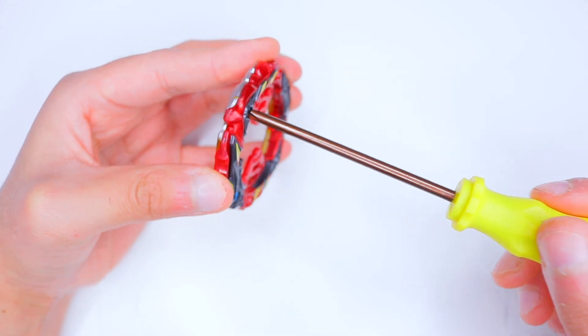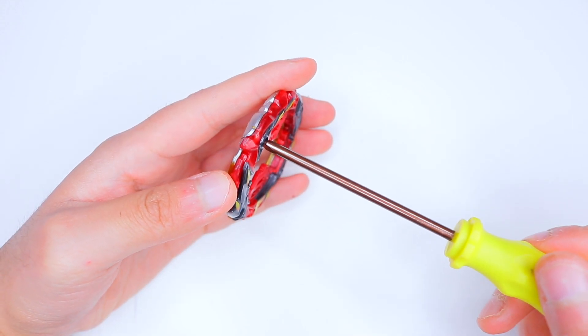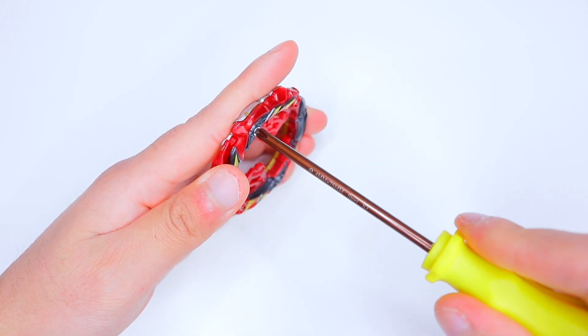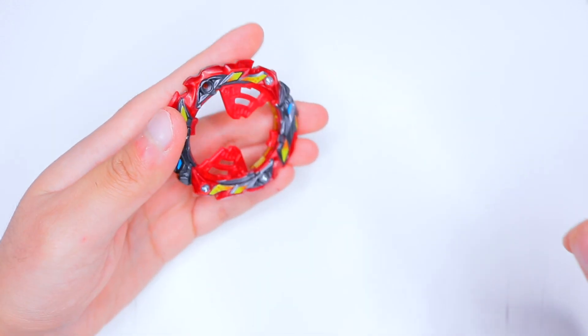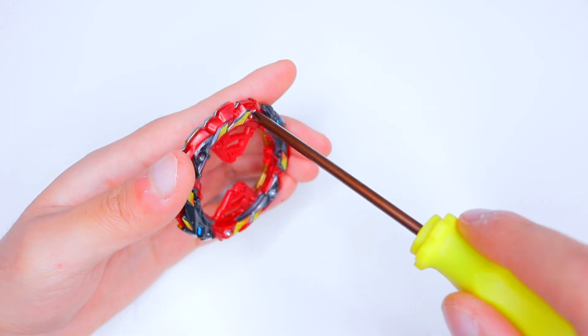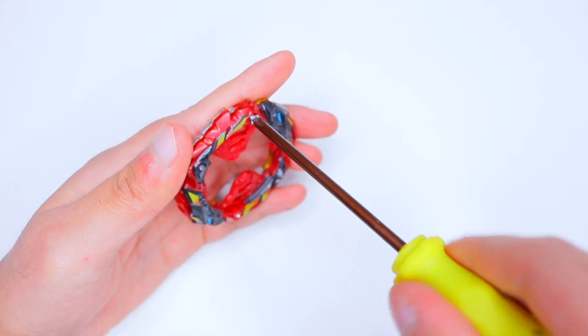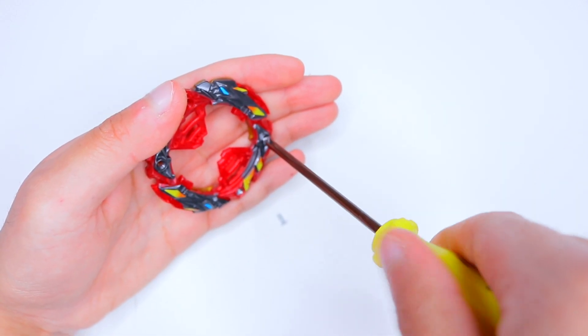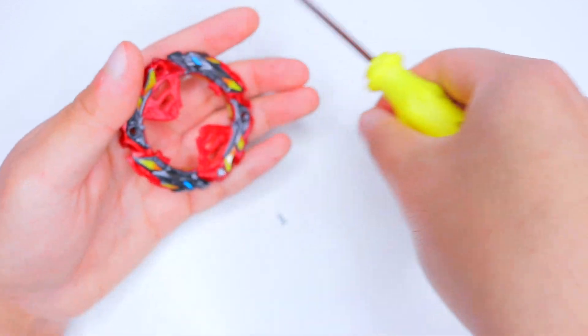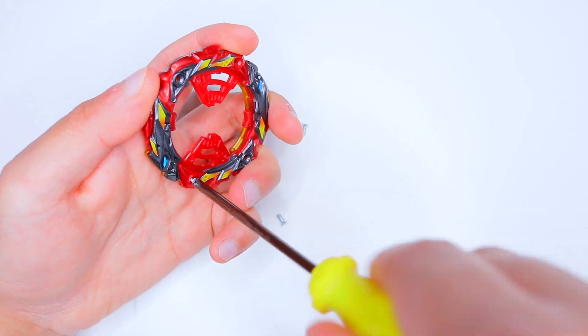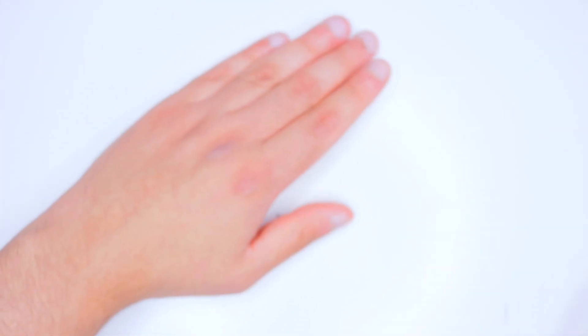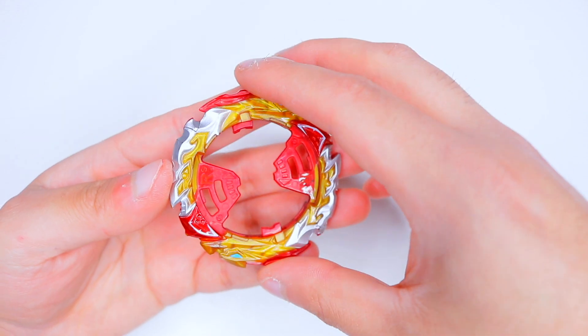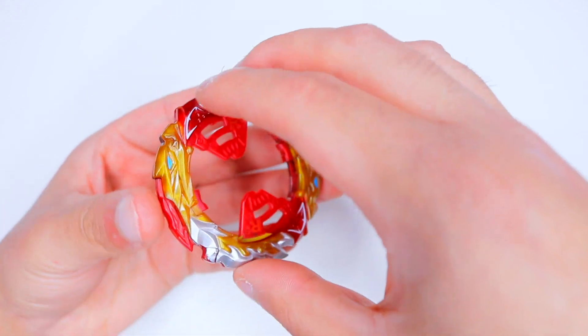We're gonna use our screwdriver to take them out carefully. My advice is to use some pressure but also not too much because you do not want to strip these screws. The screws are very much fragile, the minute you strip these screws they will be pretty much impossible to take out. We're gonna apply some pressure and they should come out fairly easily. Make sure you keep track of those screws though, you don't want to lose them, we're gonna need them later.